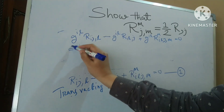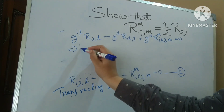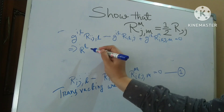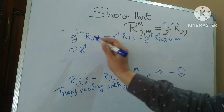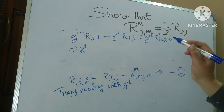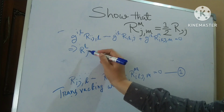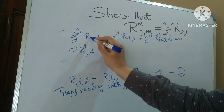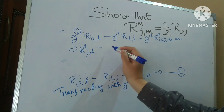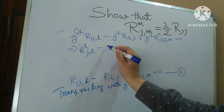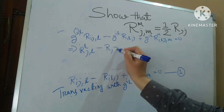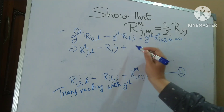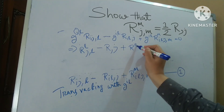So, whatever I get by transvecting — this I and this I cancel out — giving R_LJ comma L, minus R comma J, and the G^IL portion cancels, so I get the simplified expression.